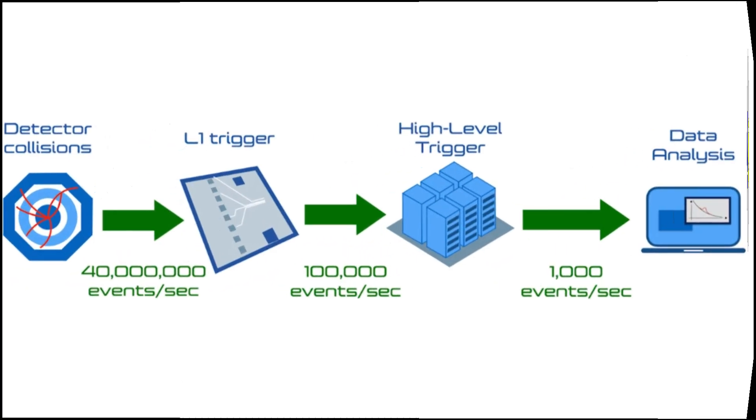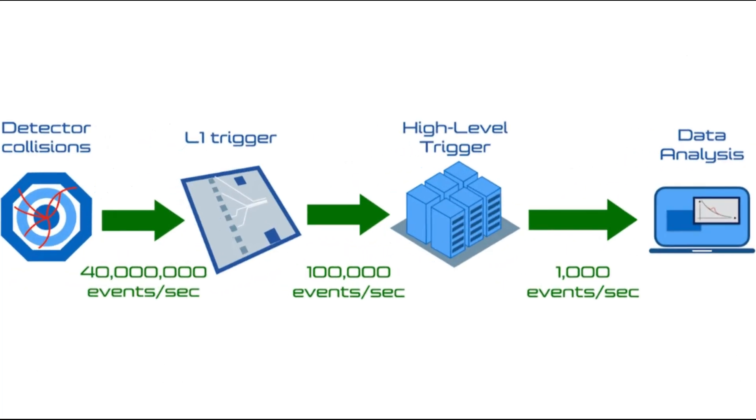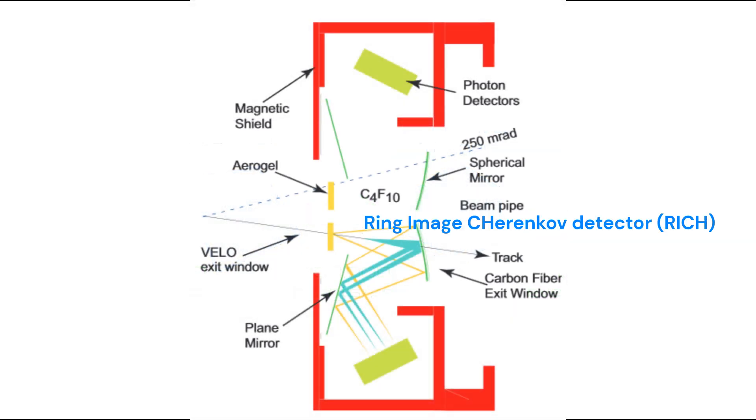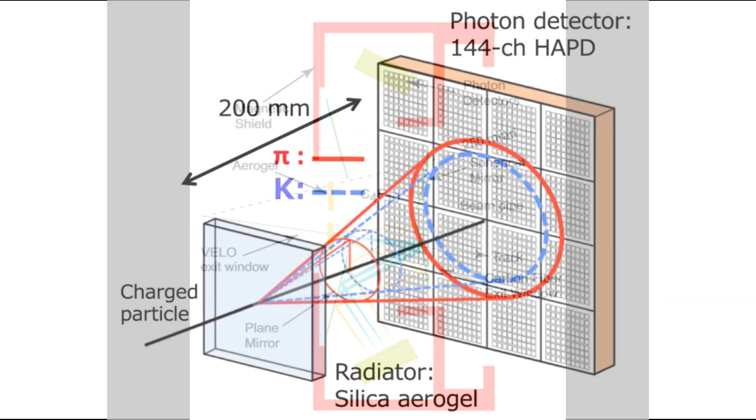We use this information to understand and reconstruct the underlying mechanisms and the physics. For example, we have something called a ring image Cherenkov detector which can distinguish the signal between a pion and a kaon